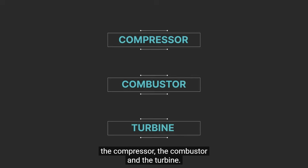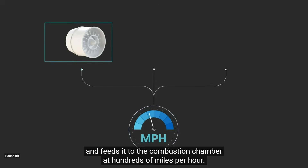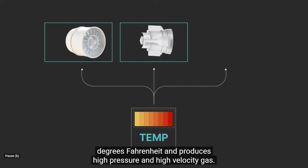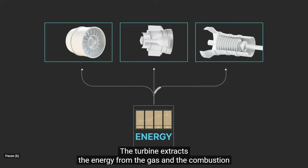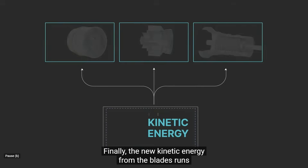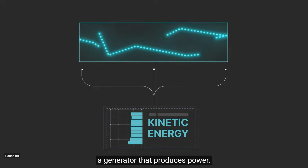The compressor takes in air from outside of the turbine and feeds it to the combustion chamber at hundreds of miles per hour. The combustor burns the fuel at more than 2,000 degrees Fahrenheit and produces high-pressure, high-velocity gas. The turbine extracts the energy from that gas with an array of stationary and rotating airfoil blades. Finally, the new kinetic energy from the blades runs a generator that produces power.